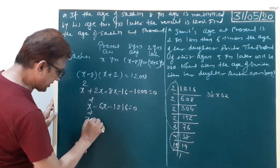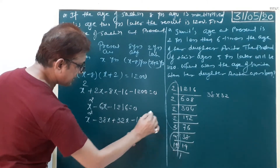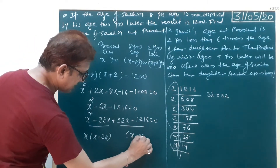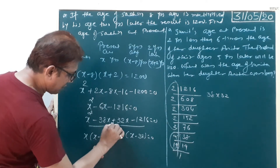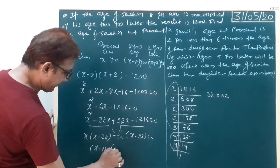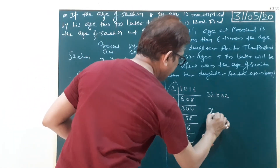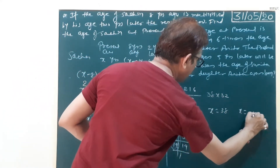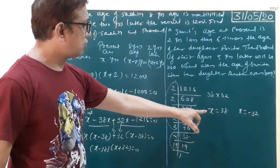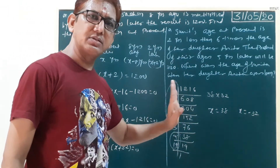38 is the bigger number. So X squared minus 38X plus 32X minus 1216 equals 0. X is the common: X minus 38. Again X minus 38, so plus 32 is the common. In our bracket: X minus 38 times X plus 32 equals 0. So X equals 38 and X equals minus 32. Negative number is not possible, so Sachin's present age is X equals 38 years.